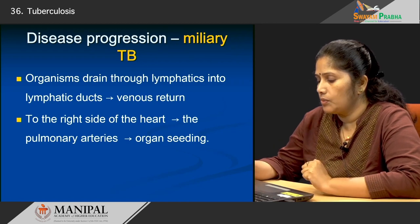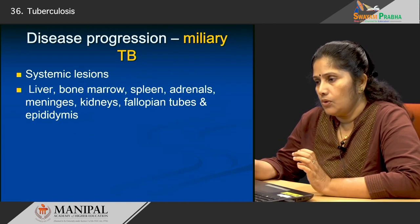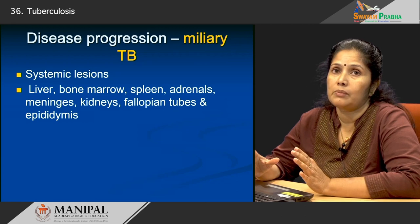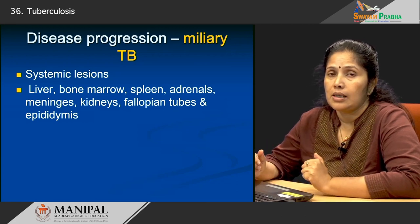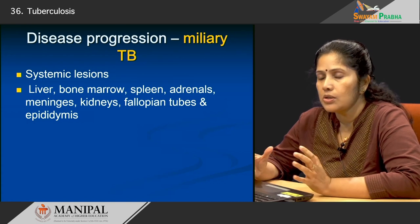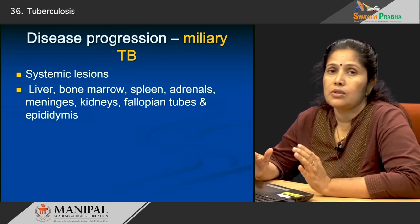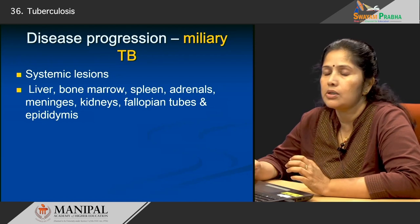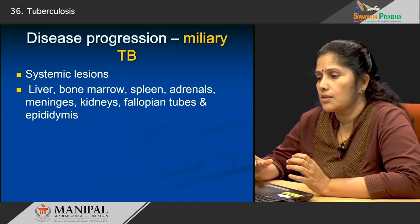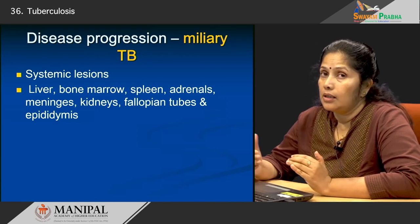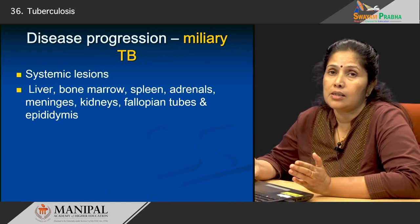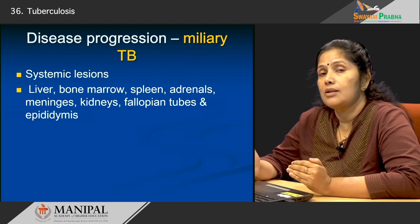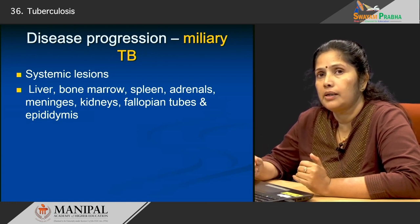That is how miliary tuberculosis develops. What started as a small lesion in the lung drains through the lymphatics, comes back through the venous return, and via the pulmonary artery is disseminated everywhere in the body. Patients with miliary tuberculosis have lesions in many organs — from the lung it can go to the liver, bone marrow, adrenals, spleen, meninges, kidneys, epididymis, and in females the fallopian tubes. The list is long — many different organs can be involved.